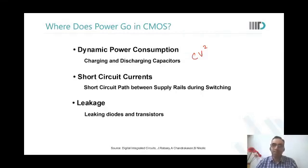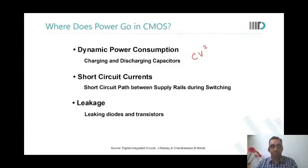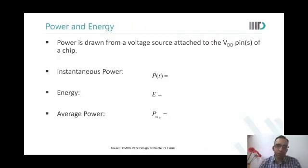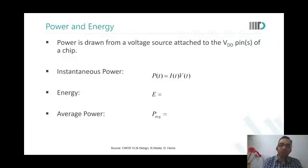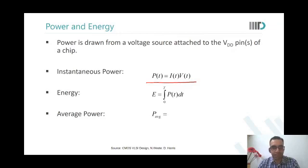Dynamic power consumption is proportional to CV² — it's not exactly CV² but proportional to it. Power in terms of instantaneous power is characterized as i(t) × V(t). Energy is the integration of that power over time over the entire cycle, and average power is then normalized energy over time.